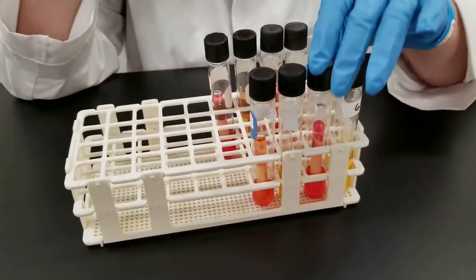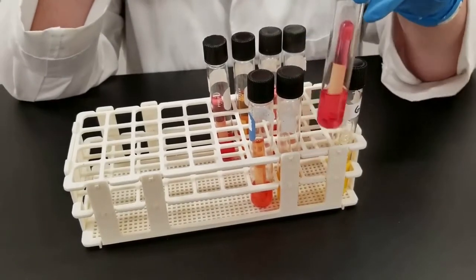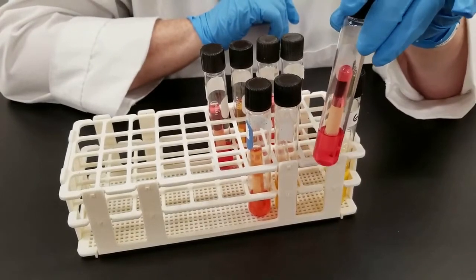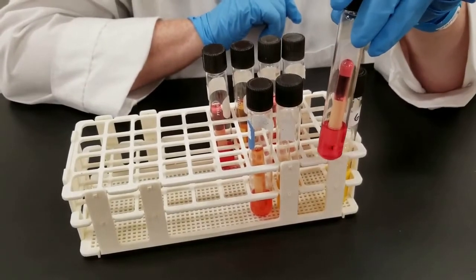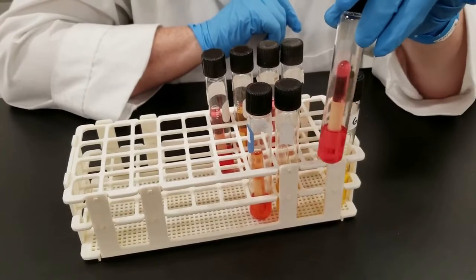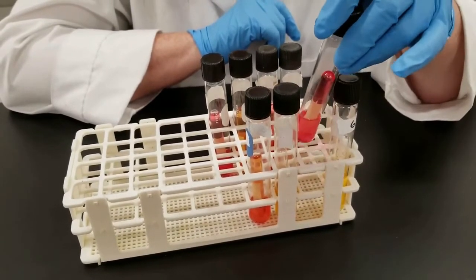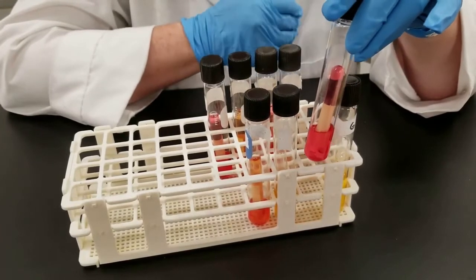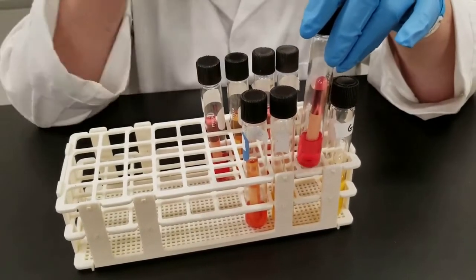Now, initially, this is what all of the tubes looked like prior to inoculation and it's that reddish color. And as you can see, the inverted tube is full of fluid. So in this particular one, this tube would be classified as a negative because you do not have acid production, you do not have gas production.